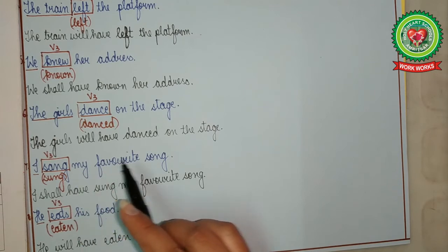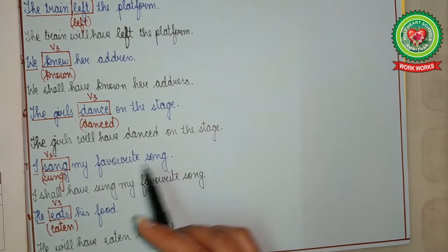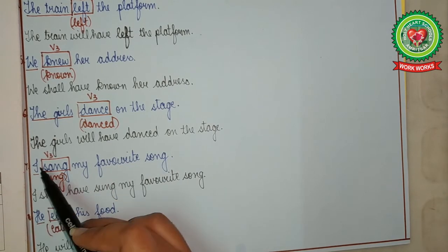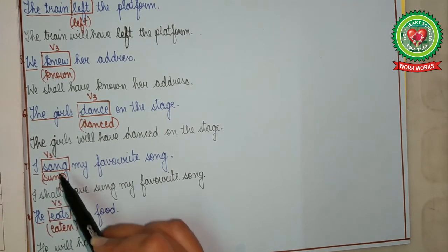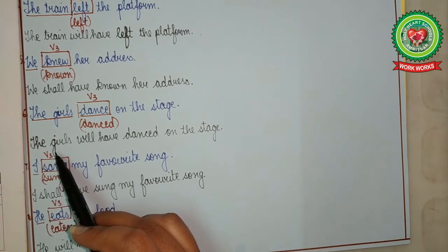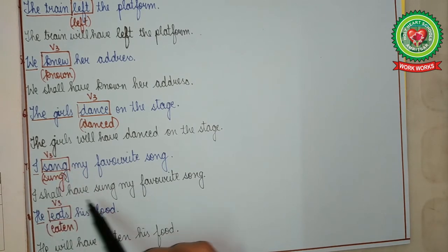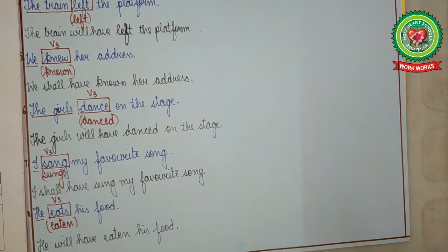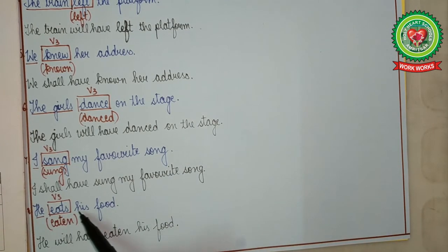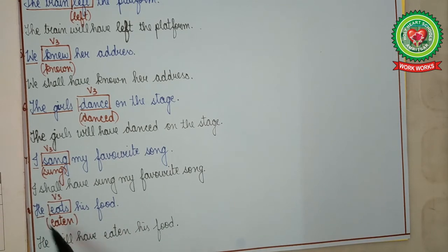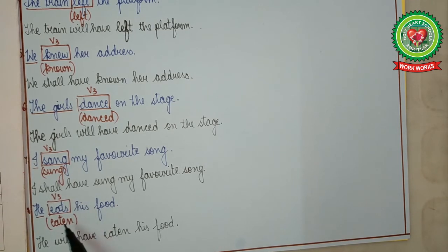'I sang my favourite song.' Subject: I — shall have. Sang changes to sung. Answer: I shall have sung my favourite song. 'He eats his food.' Subject: he — will have. Eats changes to eaten. Answer: He will have eaten his food.